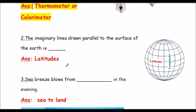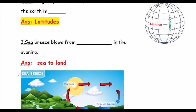Question two: The imaginary lines drawn parallel to the surface of the earth are called latitudes. The imaginary lines drawn parallel to the surface of the earth are called latitudes.